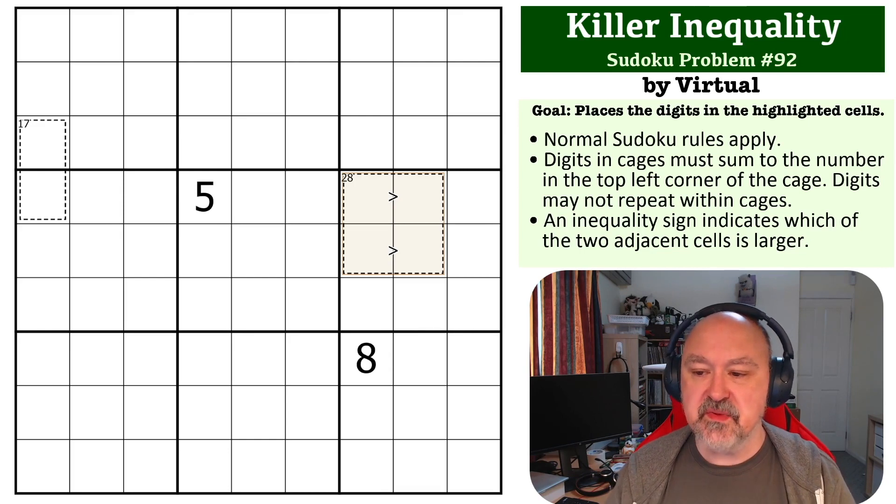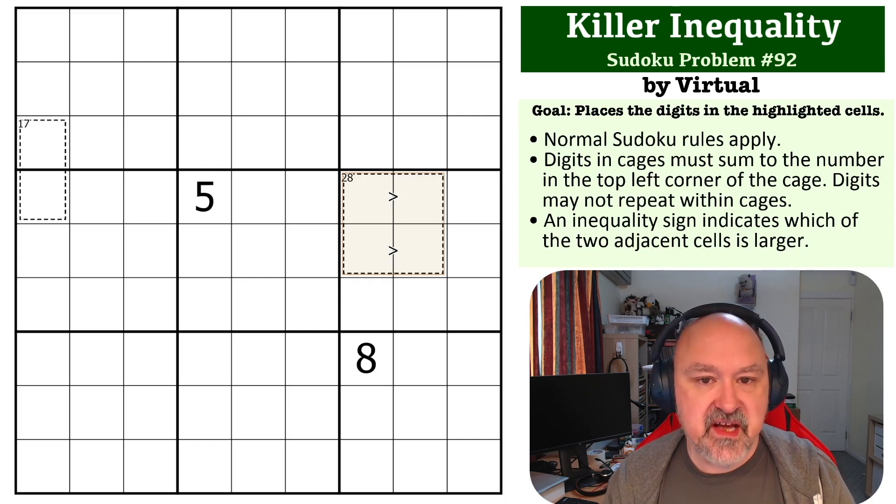The goal of this one is to place the digits into the highlighted cells in Box 6. The rules in play include killer cages, where the digits in the cages must sum to the number in the top left corner of the cage.